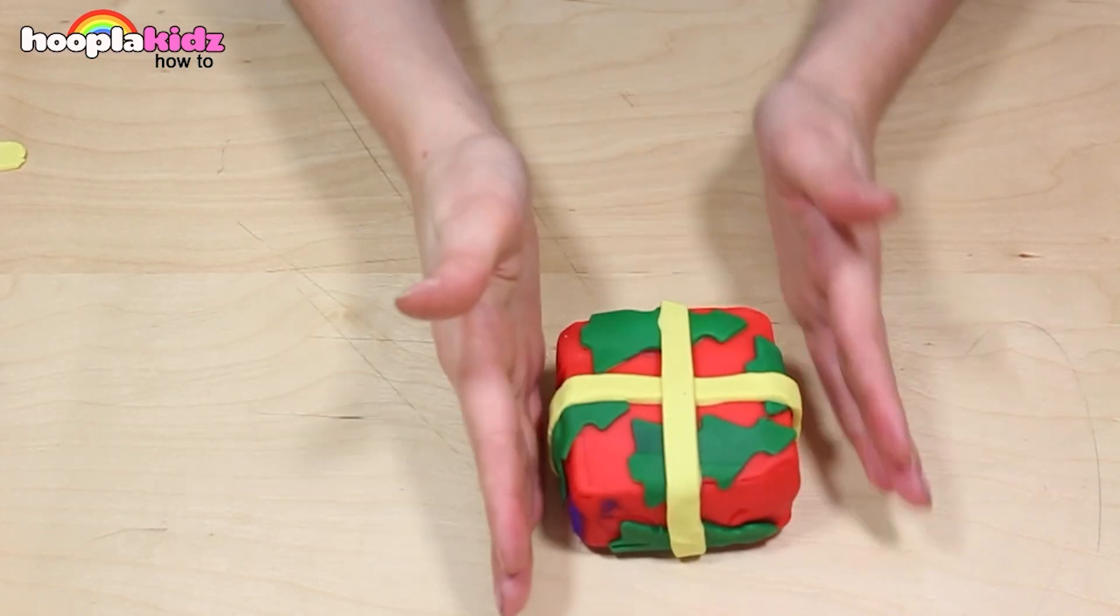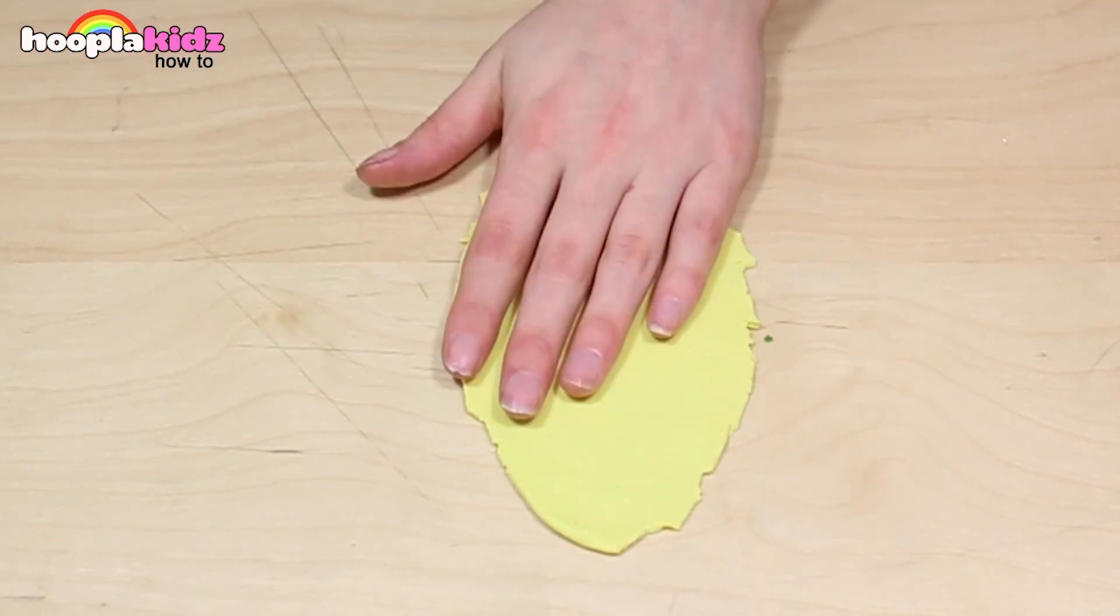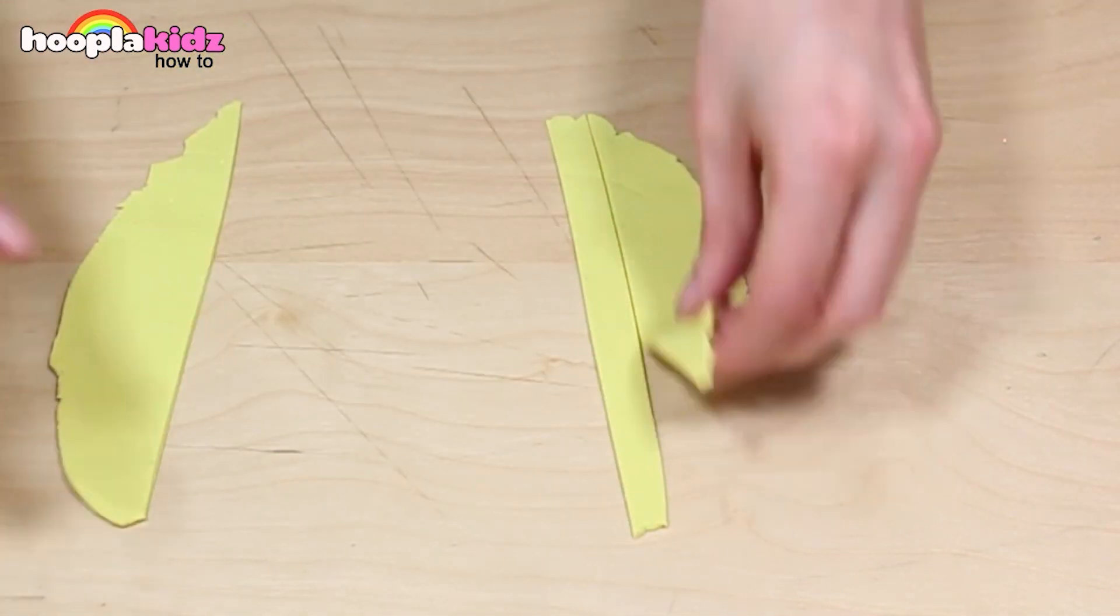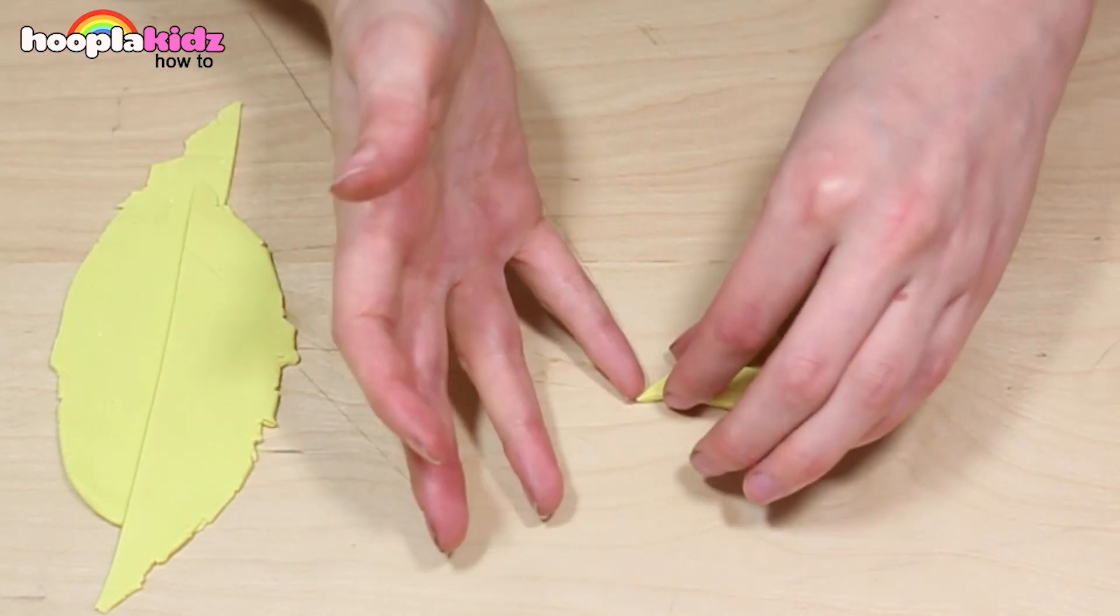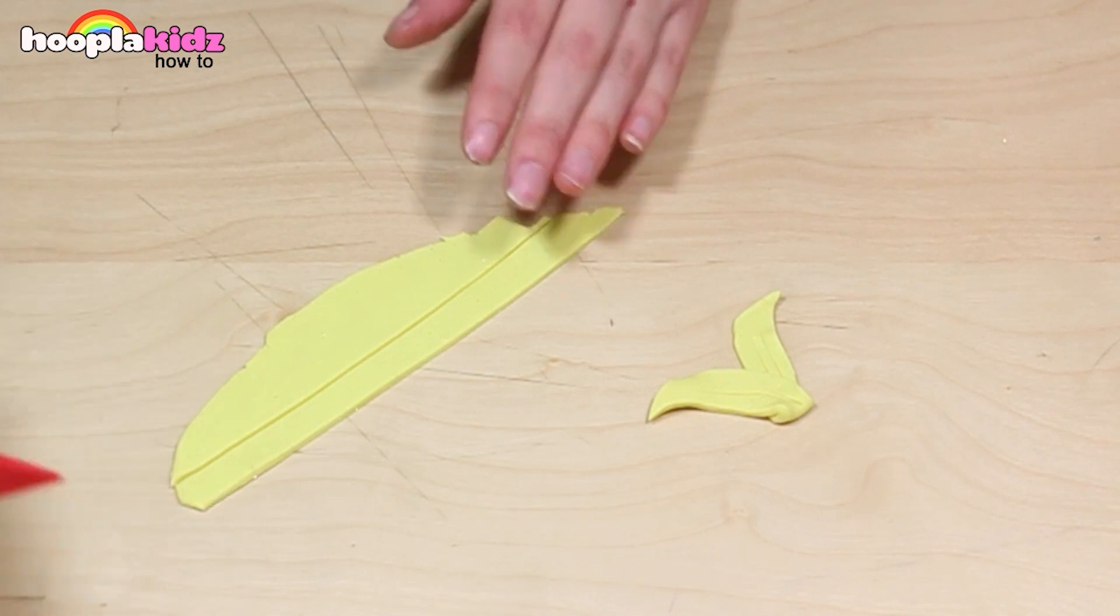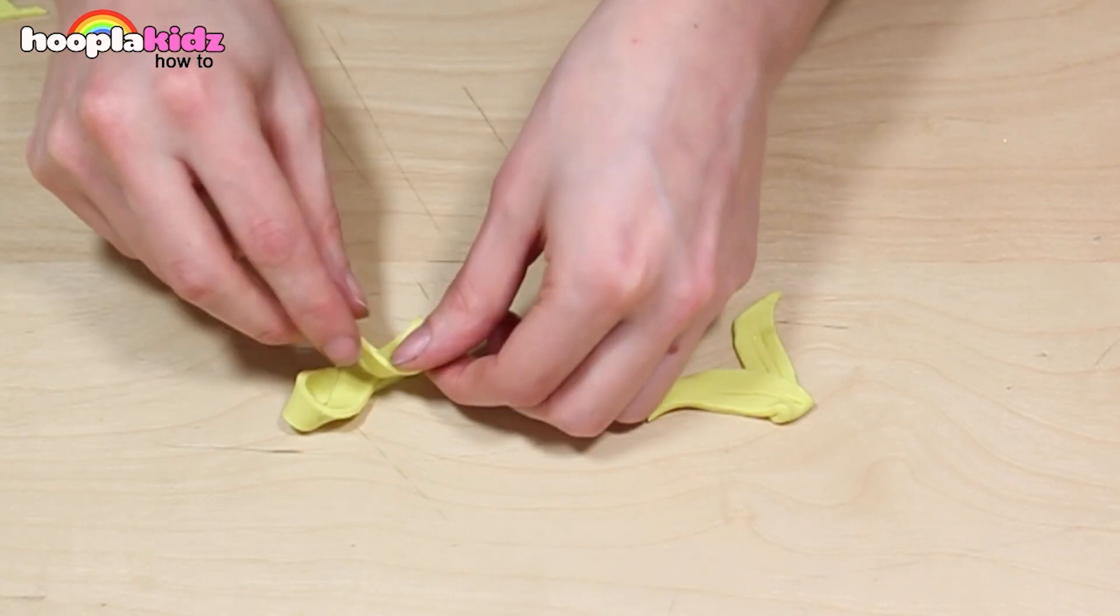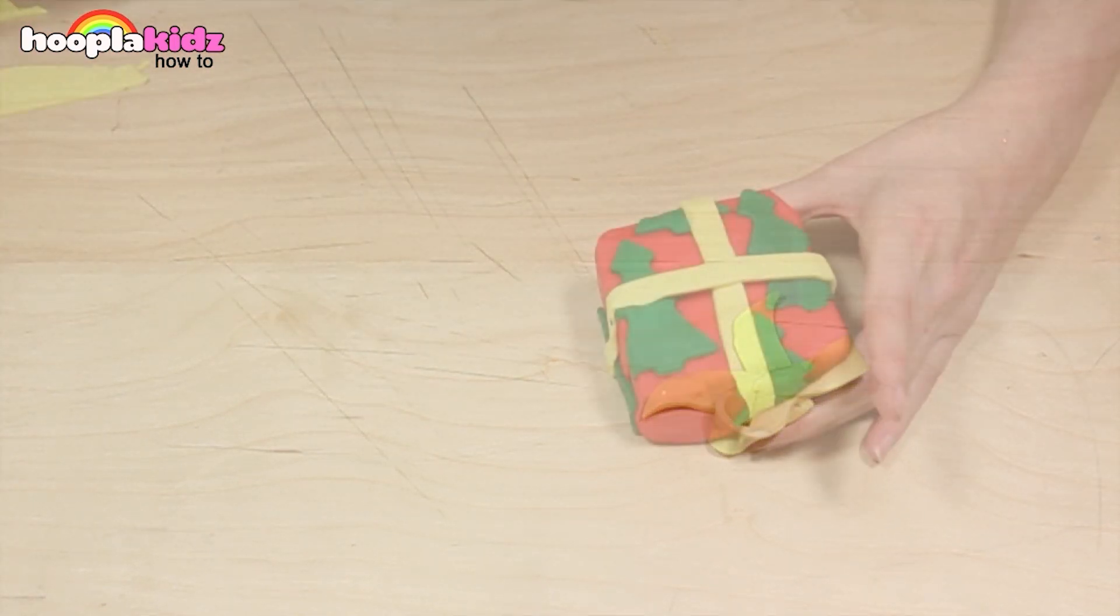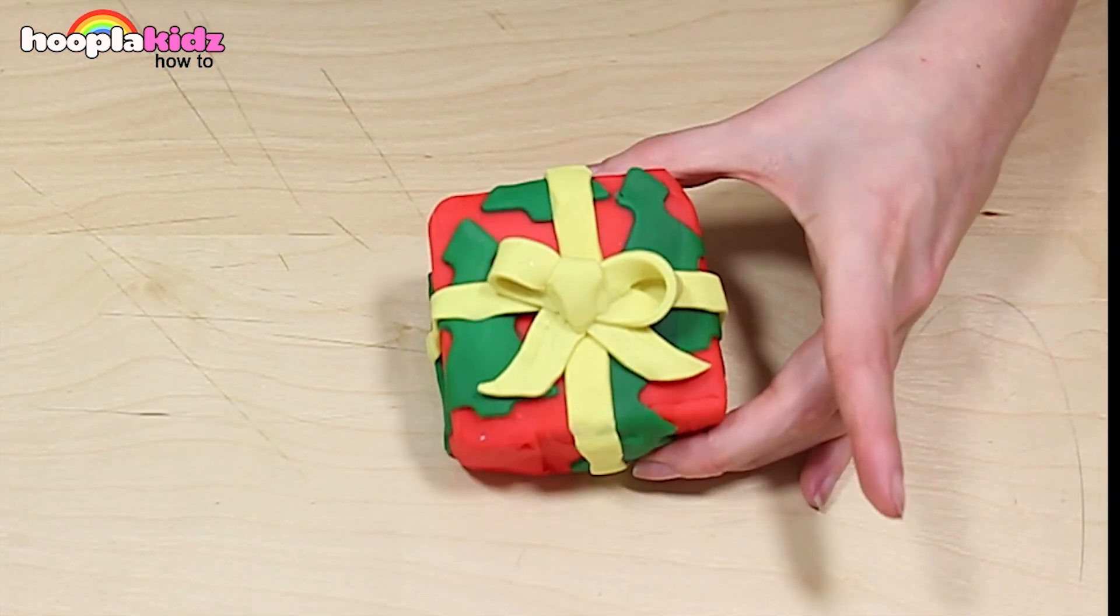Wow! This present is so pretty! Don't forget to make the bow. I'm doing this out of some more light yellow Play-Doh. Roll it flat and then cut it into shape. Perfect! Add it on top of your present. Doesn't that look pretty?